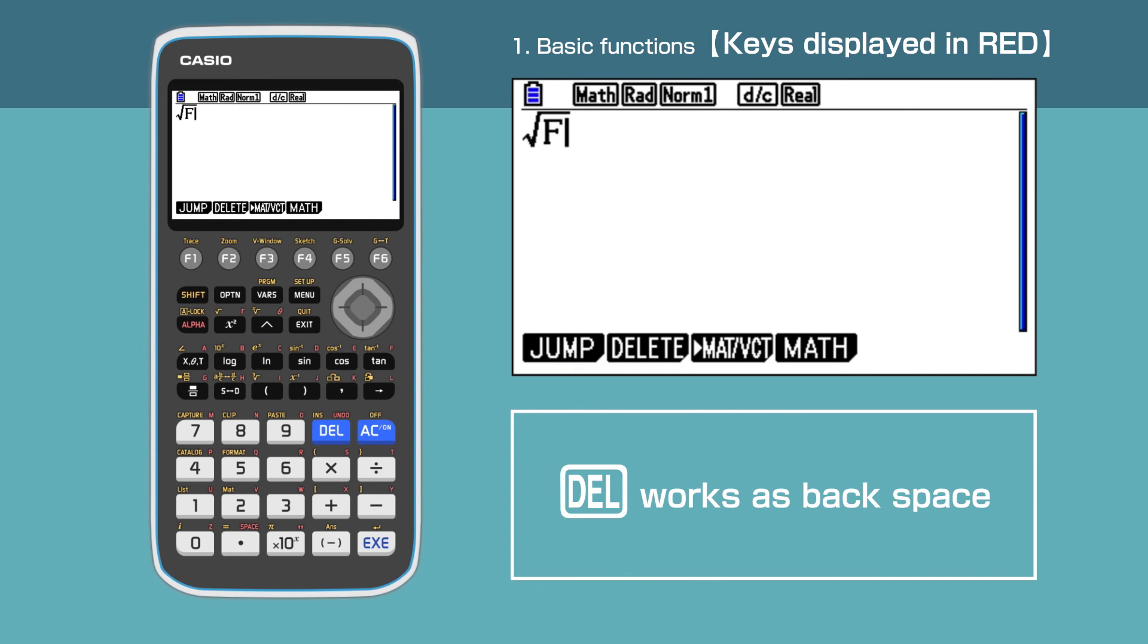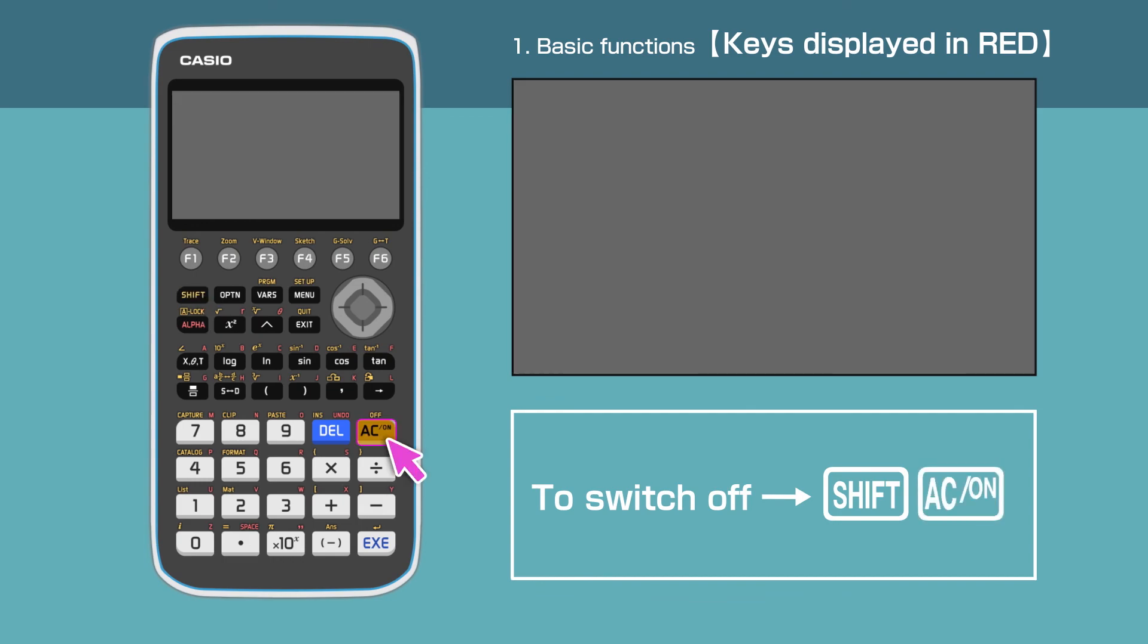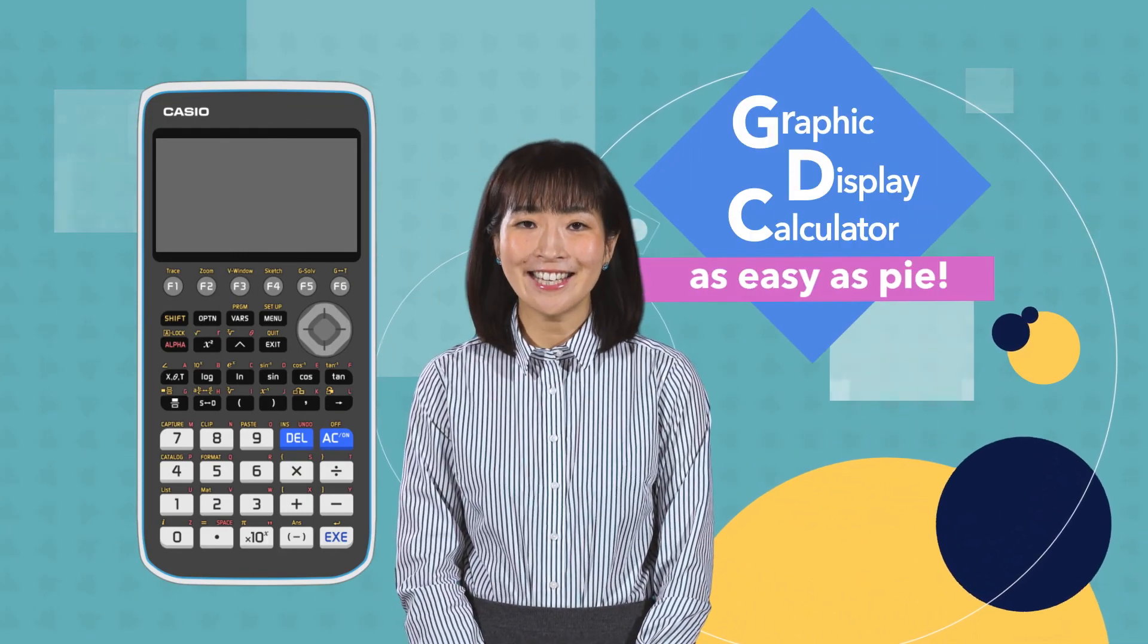The last thing we want to mention in this video is that the delete button works like backspace. Let's switch off your calculator. To finish, press shift then AC. In this video, we have shown how to enter equations with the graphic display calculator. Easy as pi.